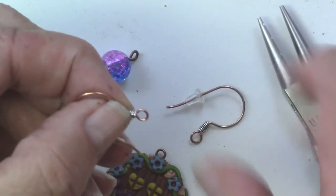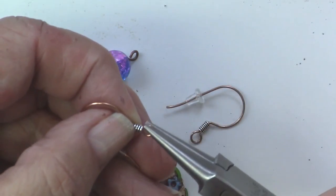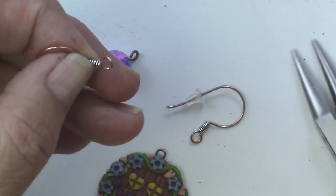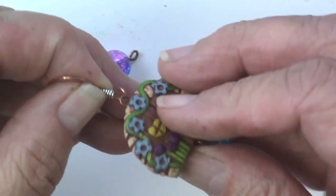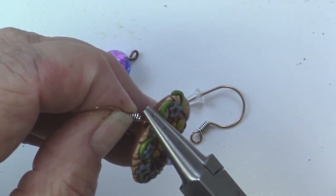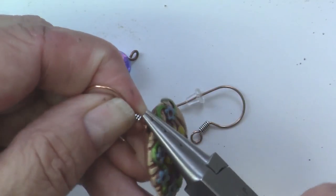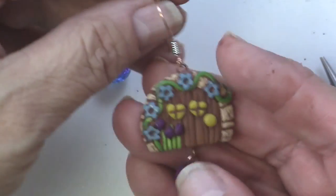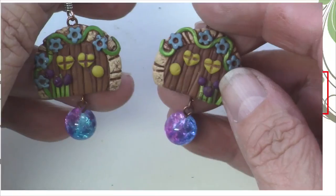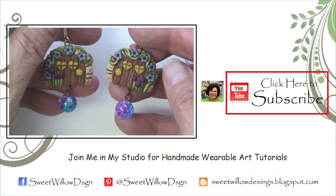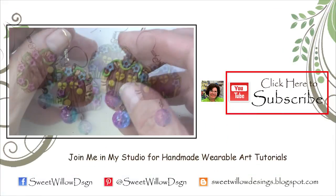I just have some ear wires. I will put the door on the ear wire. And there we go. Do that for the other side and it's as simple as that. You have the cutest pair of fairy door earrings.